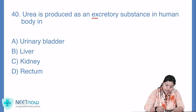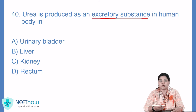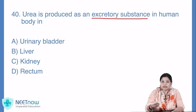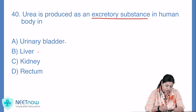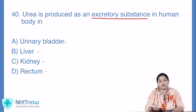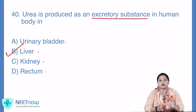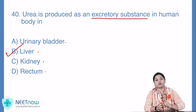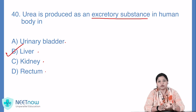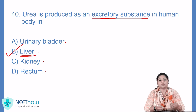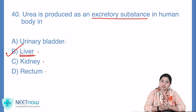Question number 40: urea is produced as an excretory substance in the human body in — yaani ki human body mein urea as an excretory substance kahan produce hota hai? Options: urinary bladder, liver, kidney, rectum. Agar hum baat karein urea ki — urea produce hota hai liver mein, jahan pe proteins ka breakdown hota hai, aur urea byproduct hota hai — nitrogen containing. So liver mein urea is produced as an excretory product. Yahan pe hum yeh chapter apna finish kar rahe hain.